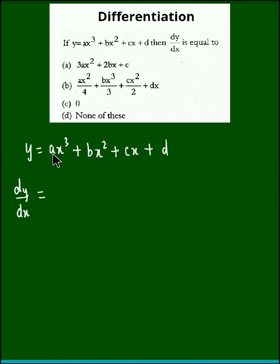Now a is the coefficient, so we keep it aside. So a times derivative of x cube, that will be the first term. Plus next, b is the coefficient, so we keep it aside into derivative of x square. Plus c again is the coefficient of x, so we keep c as it is.